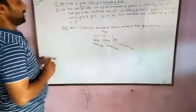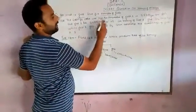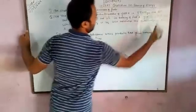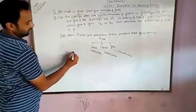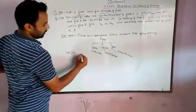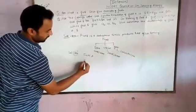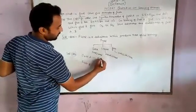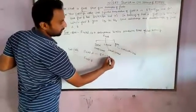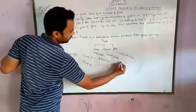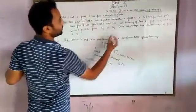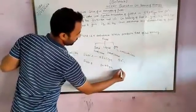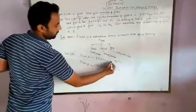Now question number 18, part B: calorific value and ignition temperature — there are two terms related to fuel. We have two fuels, fuel A and fuel B. Fuel B's calorific value is 80 KJ per gram, and its ignition temperature is 10 degrees. We compare these two fuels.